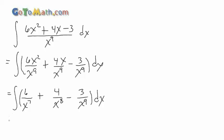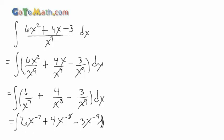So we have 6 over x to the seventh, plus 4 over x to the eighth, minus 3 over x to the ninth, dx. Now we're going to rewrite again, bringing x to the ninth up into the numerator as a negative exponent. So we have 6x to the negative seven, plus 4x to the negative eight, minus 3x to the negative ninth.